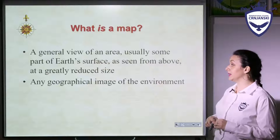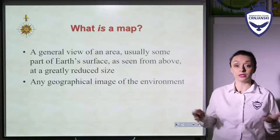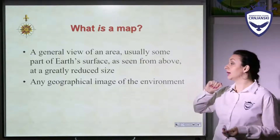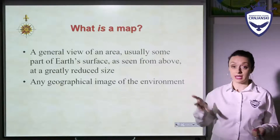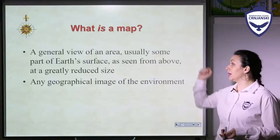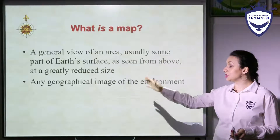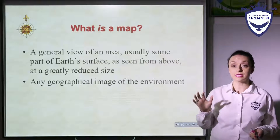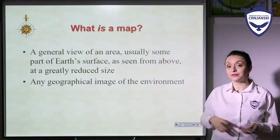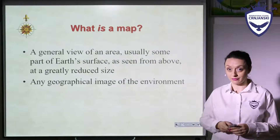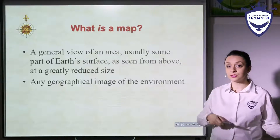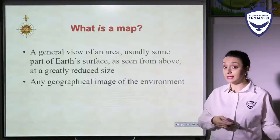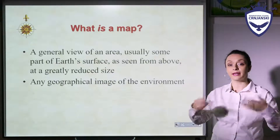A map is a general view of an area, usually some part of the Earth's surface as seen from above, at a greatly reduced size. A map is also any geographical image of the environment. Maps can be used for many different purposes — not just for geography, but also in history or something else — by using different data and information that can be applied graphically.